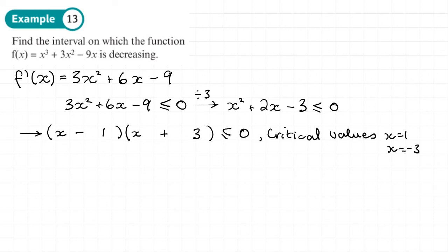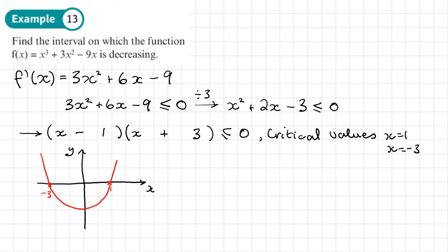We want to do a sketch to help us decide the interval for which this expression is below the axis. This is going to be a U-shaped quadratic crossing at the critical values 1 and −3. So we put 1 here and −3 here. We're interested in the part where it's less than or equal to zero — the bit below the axis — and that's below the axis in the interval between −3 and 1.